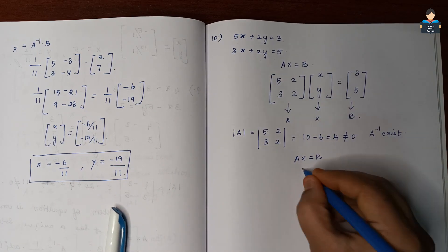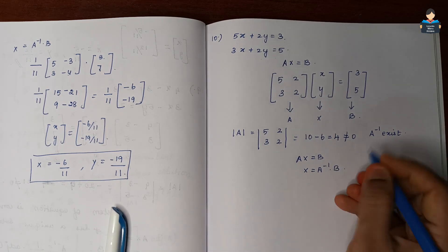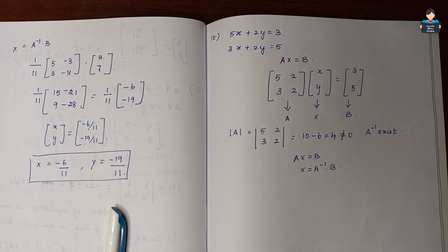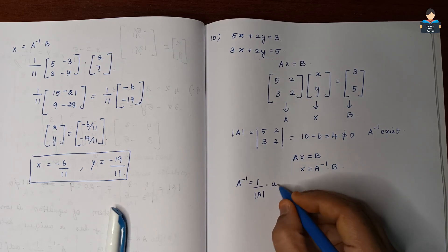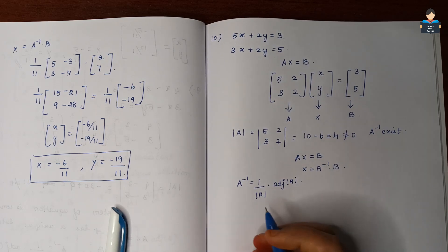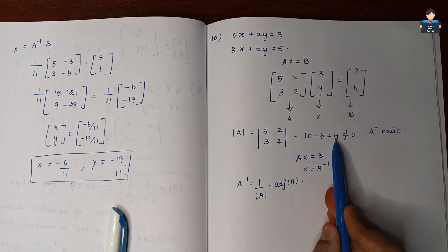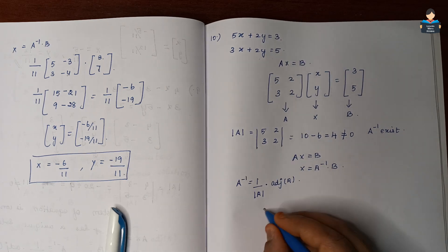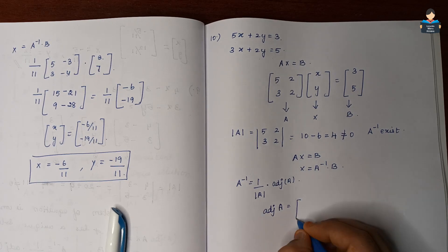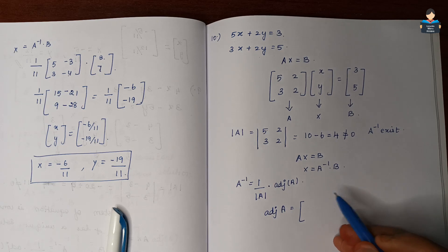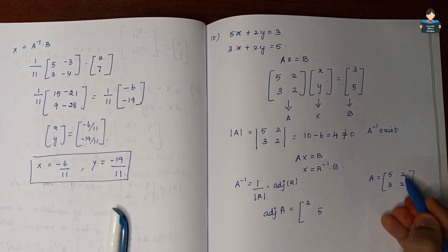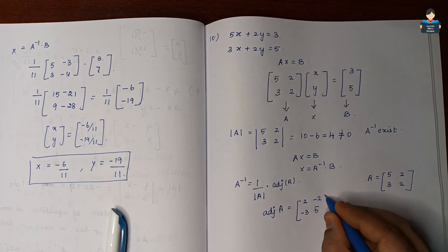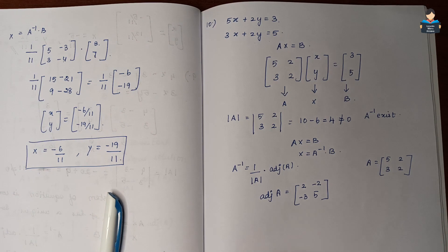Since AX = B, we have X = A-inverse × B. To find A-inverse, we use the formula: A-inverse equals 1 by det(A) into adjoint of A. The determinant of A is 4. To find the adjoint of A, we take matrix A = [5, 2; 3, 2] and interchange the diagonal elements and negate the off-diagonal elements.